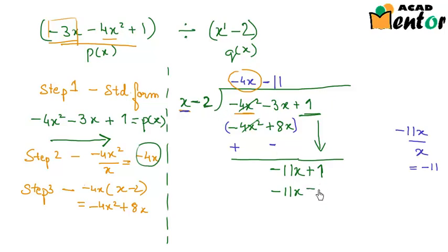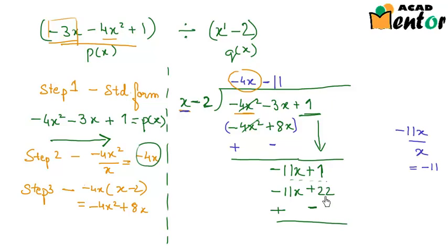Multiplying minus 11 by x gives minus 11x, and minus 11 by minus 2 gives positive 22. Subtracting this from minus 11x plus 1, the signs change to plus 11x and minus 22. The terms minus 11x and plus 11x cancel out, leaving minus 22 plus 1, which equals minus 21.